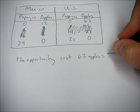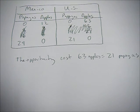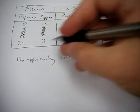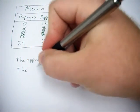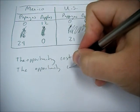So for the US let's say 63 apples. The opportunity cost of 63 apples is 21 papayas. But now we want to find out what the opportunity cost of one apple is.